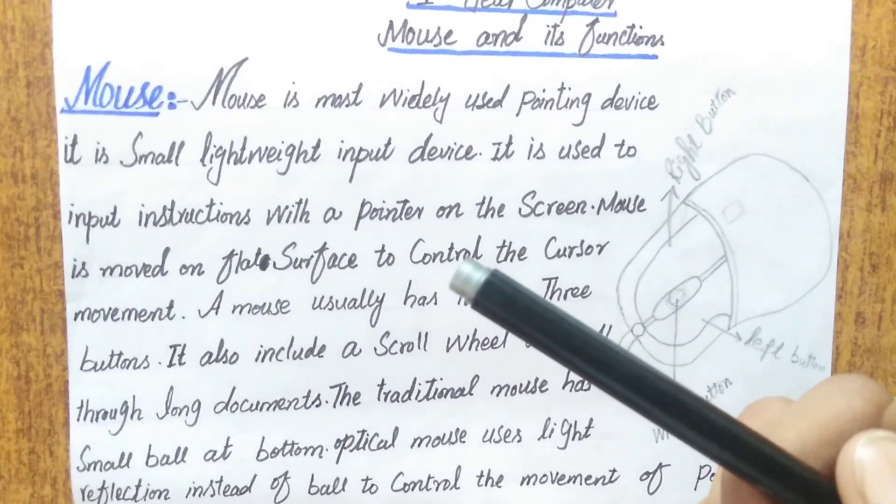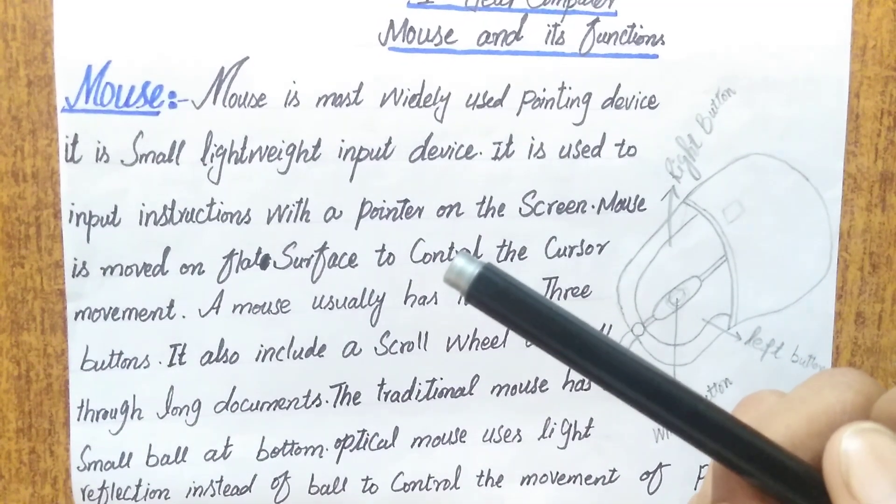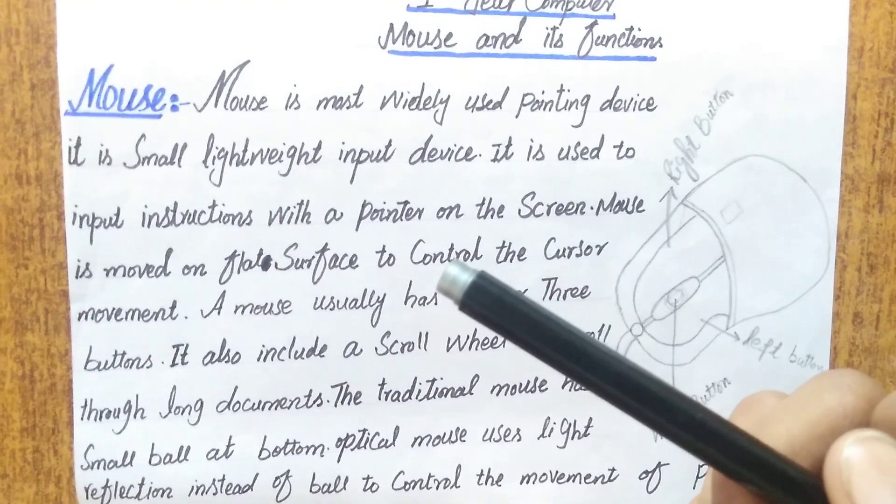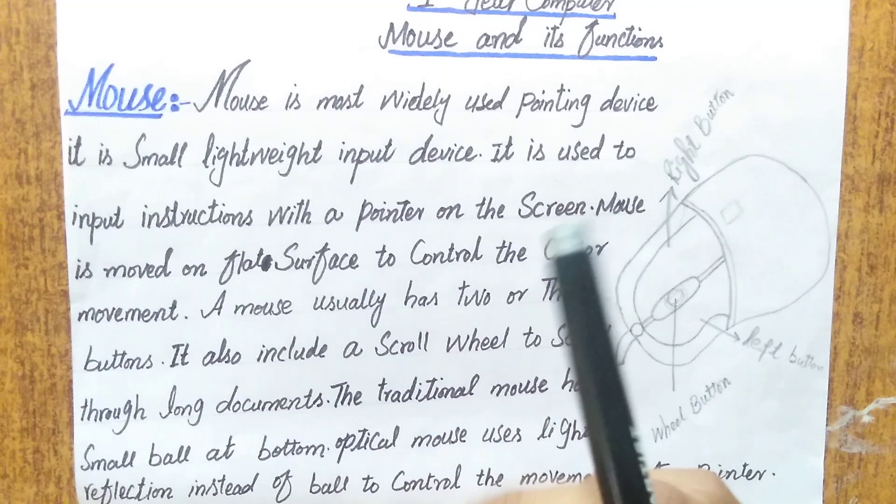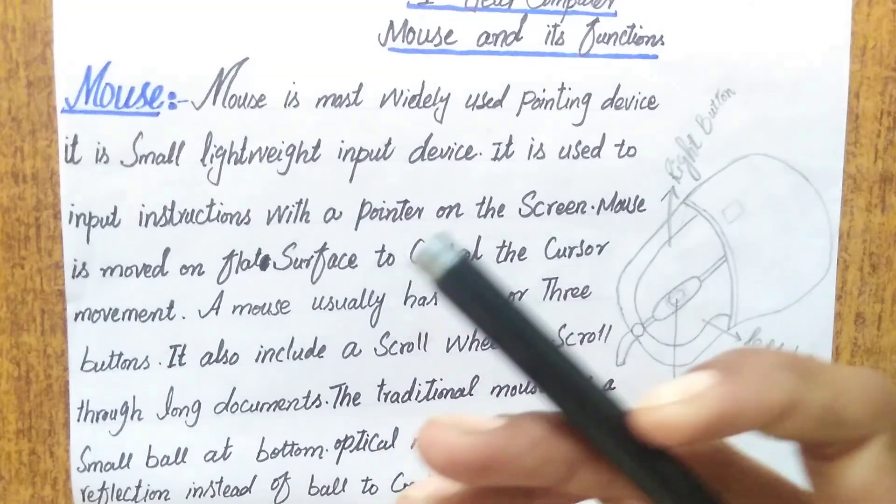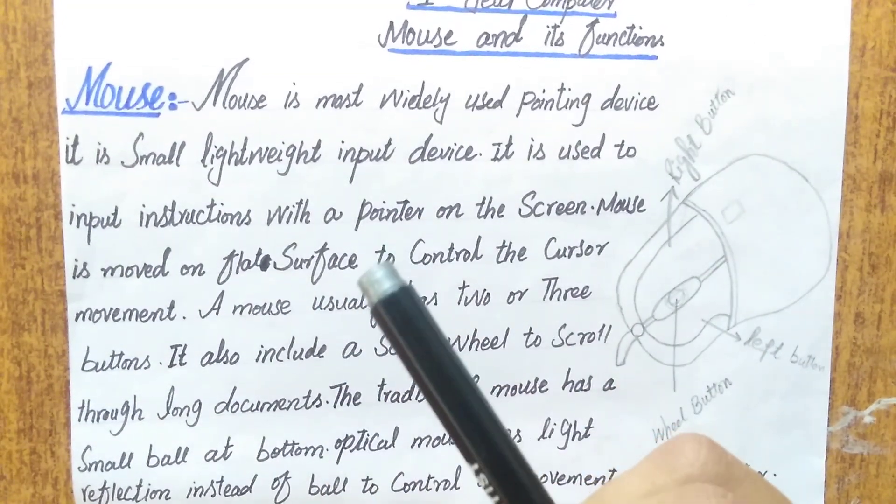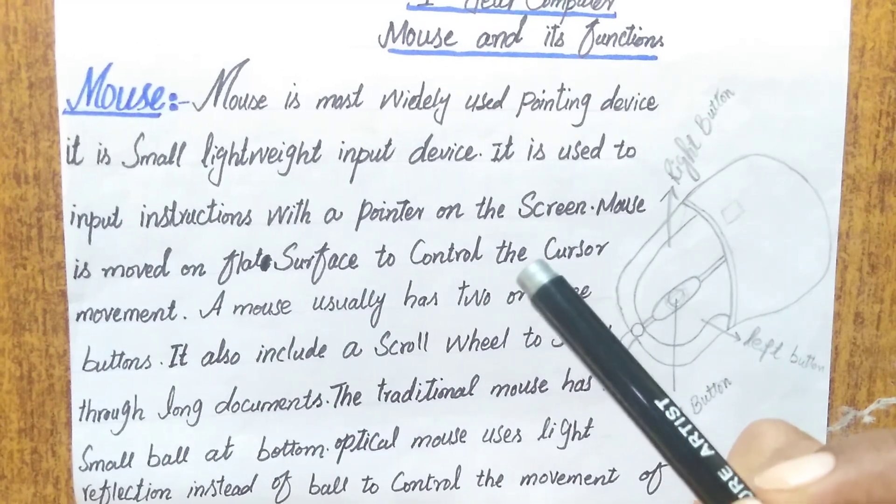Mouse is a very important pointing device which is small and lightweight. It is used to input instructions on the screen.